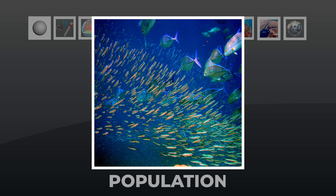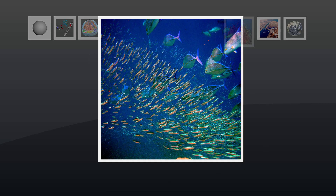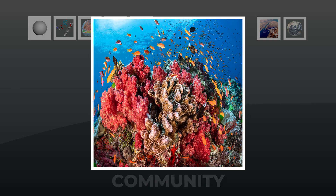A population is a group of single-celled or multi-celled individuals of the same species occupying a specified area. This is a fish population in the Red Sea. All populations of all species occupying a specified area form a community. This is part of a coral reef community in the Gulf of Aqaba at the northern end of the Red Sea.